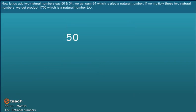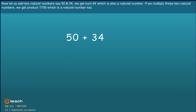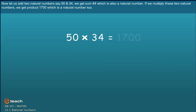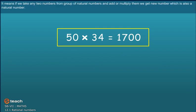Now, let us add two Natural Numbers, say 50 and 34. We get sum of 84 which is also a Natural Number. If we multiply these two Natural Numbers, we get product 1700 which is a Natural Number too. It means, if we take any two numbers from group of Natural Numbers and add or multiply them, we get new number which is also a Natural Number.